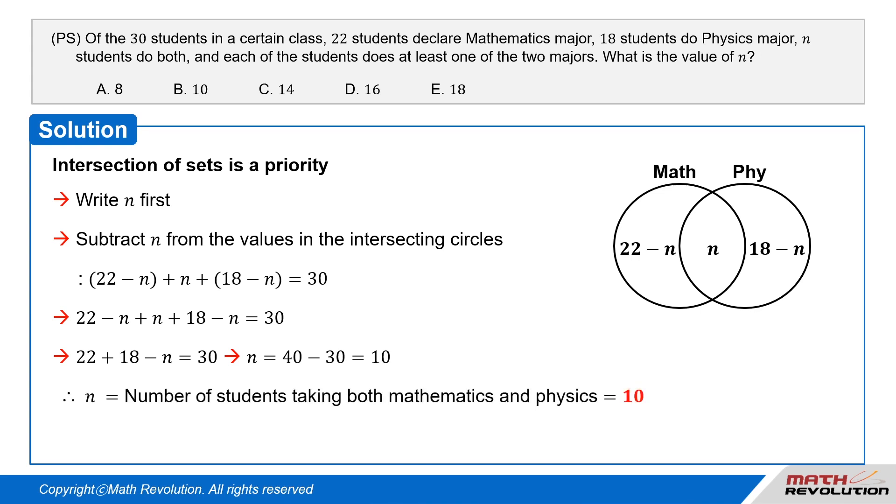Hence, the number of students taking both maths and physics major is 10. Thus, B is the correct answer. Answer B.